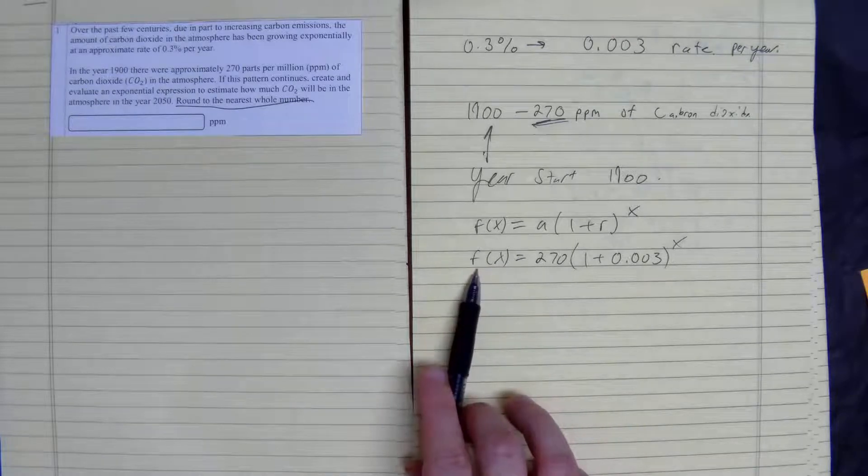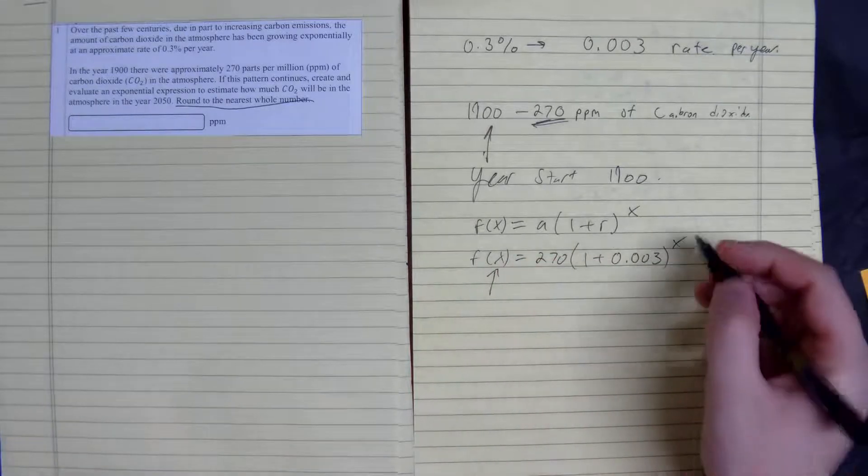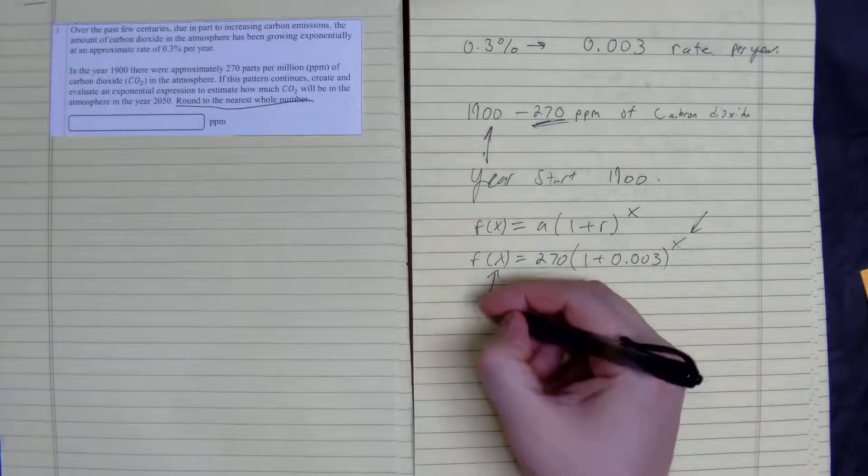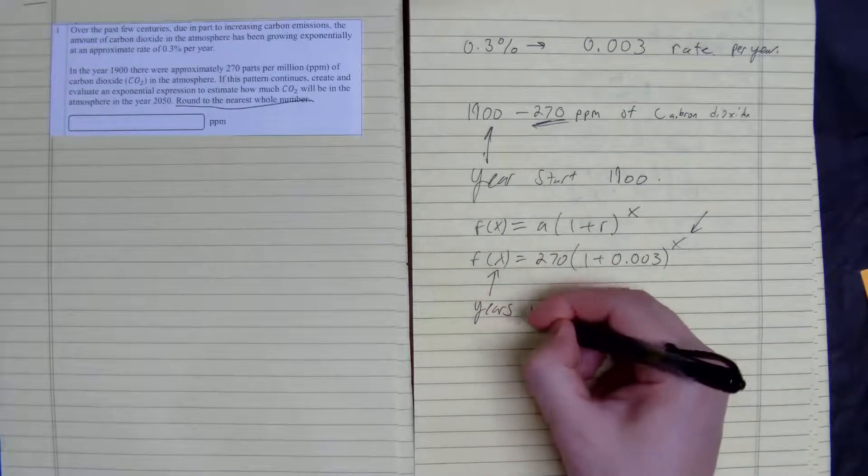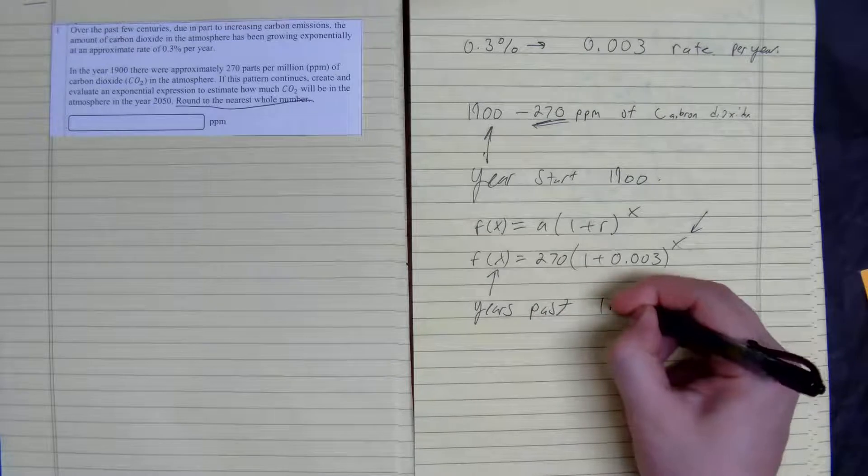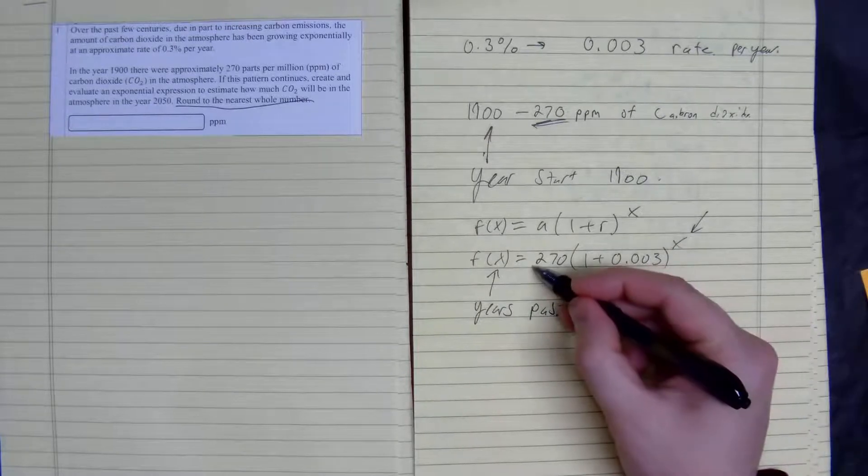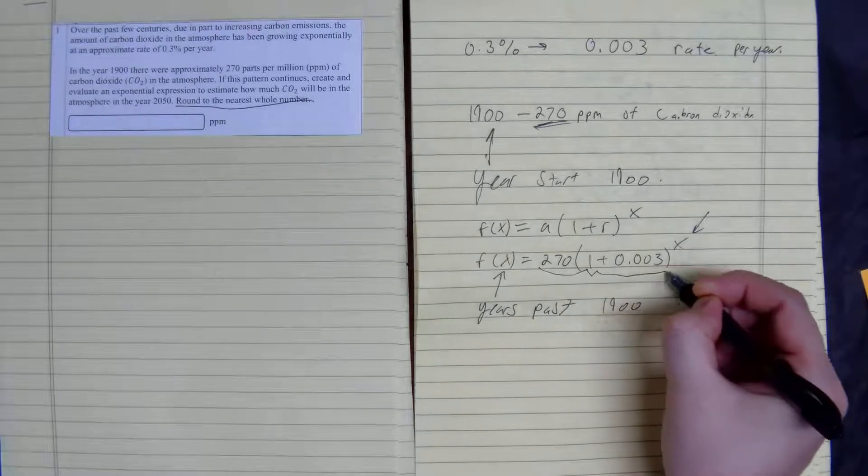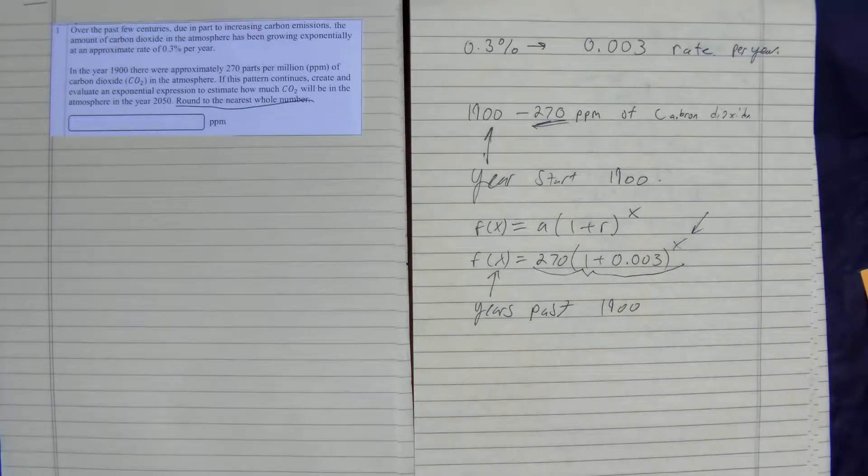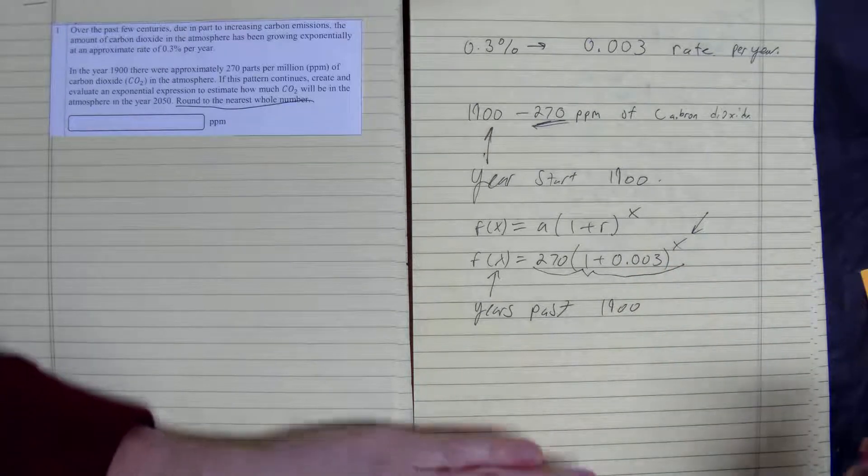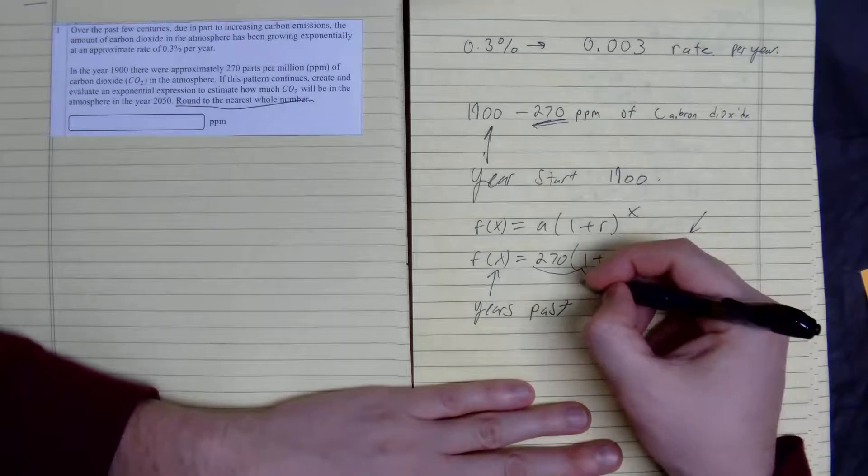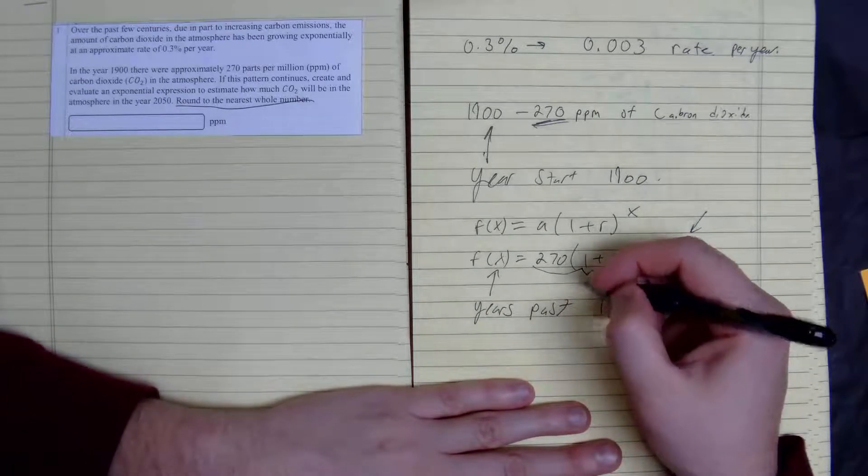X, our input, is the years past the 1900s. And our output is going to be the CO2 in the atmosphere.